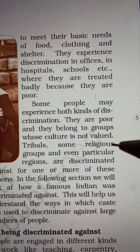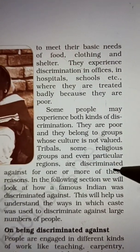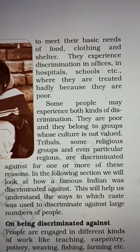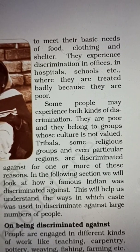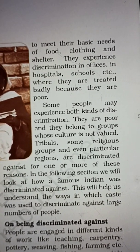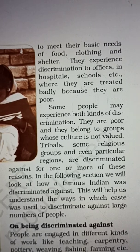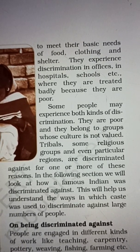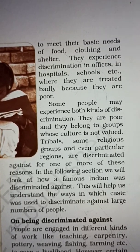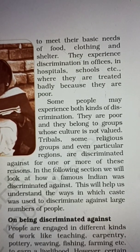Some people may experience both kinds of discrimination — they are poor and they belong to groups whose culture is not valued, such as tribal communities. Some religious groups and people from particular regions are discriminated against for one or more of these reasons. In the following section we look at how a famous Indian was discriminated against. This will help us understand the ways in which caste was used to discriminate against a large number of people. Ab dekhen, yahan par do se bhi zyada type ka discrimination ho sakta hai — pehle aap garib hain aur doosra aap kisi low caste ya tribal group se belong karte hain. Hum log padhenge ki kis prakar se ek famous Indian ko bhi discrimination face karna pada.